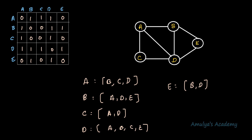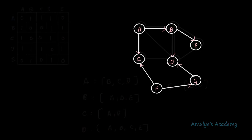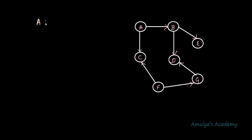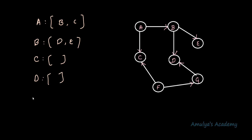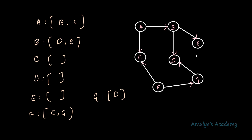Let's take another example with a directed graph. For node a, we need to write down which nodes a is adjacent to. There is an edge from a to b, so a is adjacent to b and we write b. There is an edge from a to c, so a is adjacent to c and we write c here. So this is the adjacency list for a directed graph.